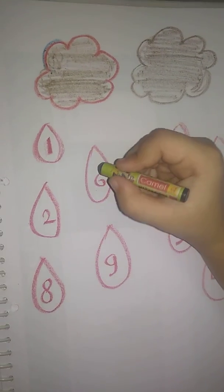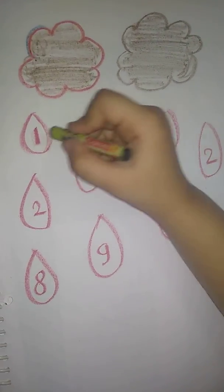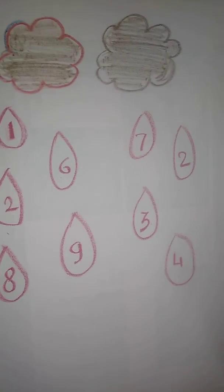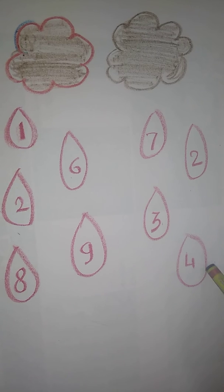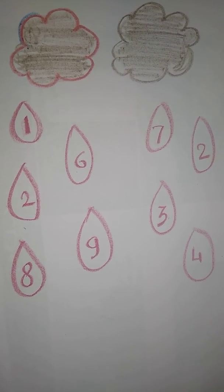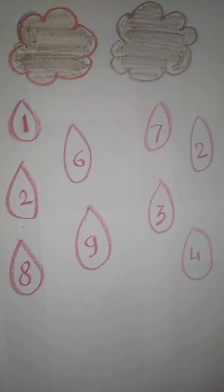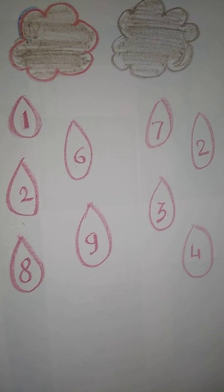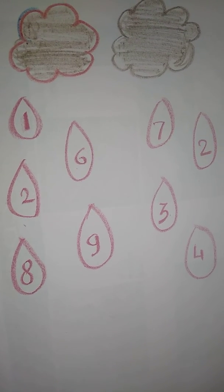Mama. Wait. Count the number. 1, 2, 3, 4. 4. 5, 5, 5. You didn't write 5. You didn't write. Okay. Next number. Next number.